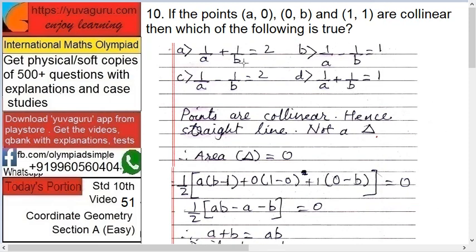Next, if the points (a, 0), (0, b), and (1, 1) are collinear, then which of the following is true? These are the four...